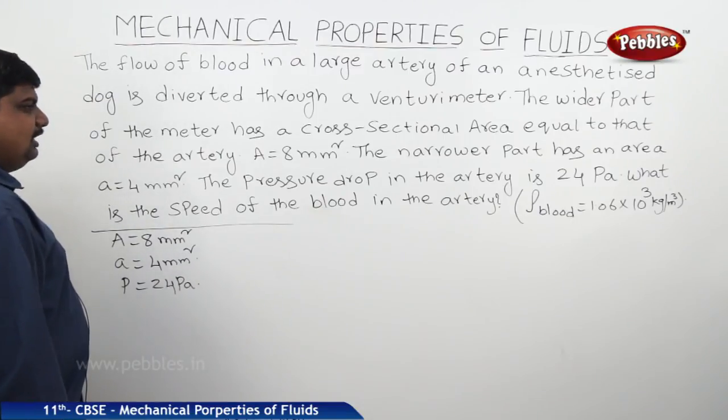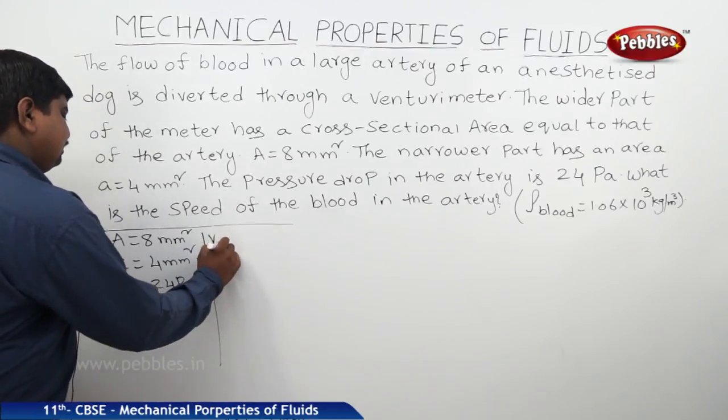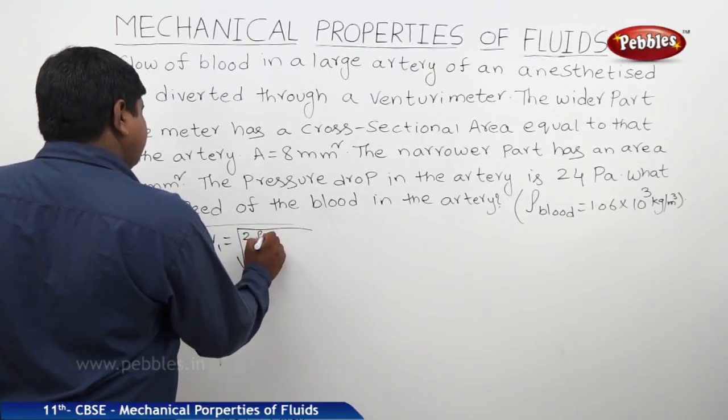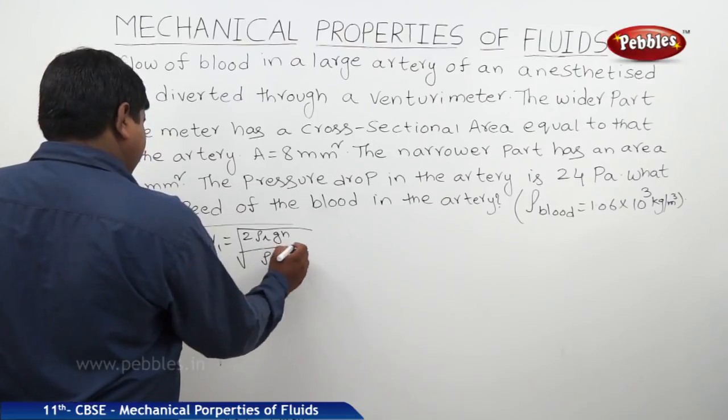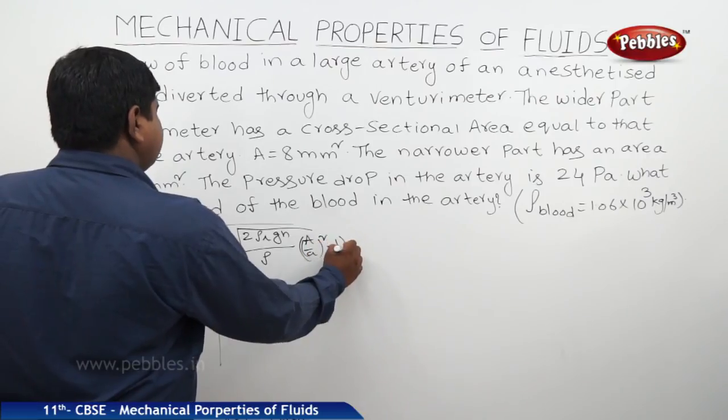We know that velocity is equal to square root of 2ρ_L gh by ρ into A by a whole square minus 1.